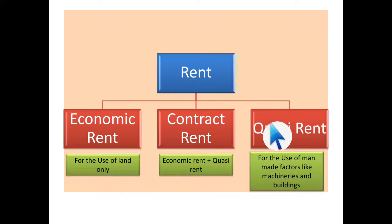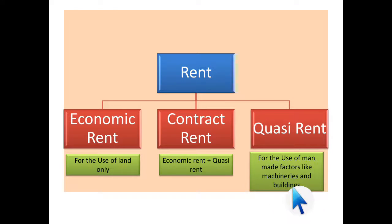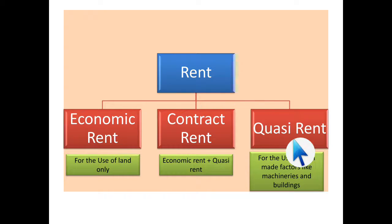Economic rent is for the use of land only — however much you use the land, you pay rent for that purpose. Quasi rent is for the use of man-made factors like machinery and buildings. Suppose you are in an agriculture activity, using land for production. After production, you need to store your produce, and you use a building for that — to use that building you pay a separate rent called quasi rent. Contract rent is broader: if you add economic rent and quasi rent together, you get your contract rent. So contract rent is the broader concept, and economic rent and quasi rent are parts of it.